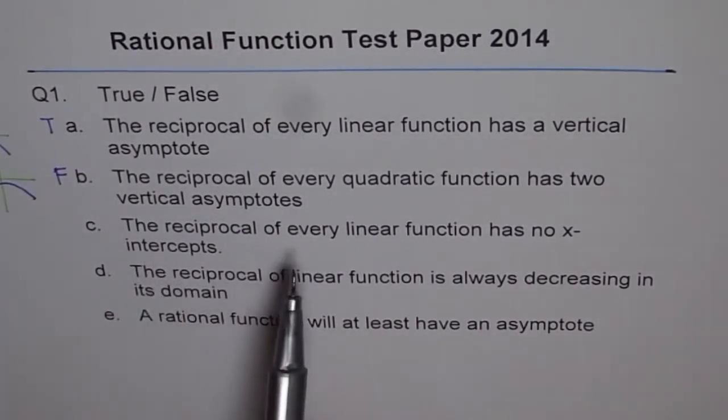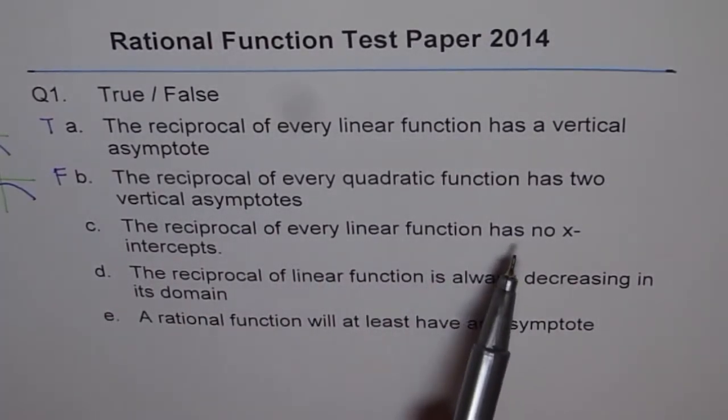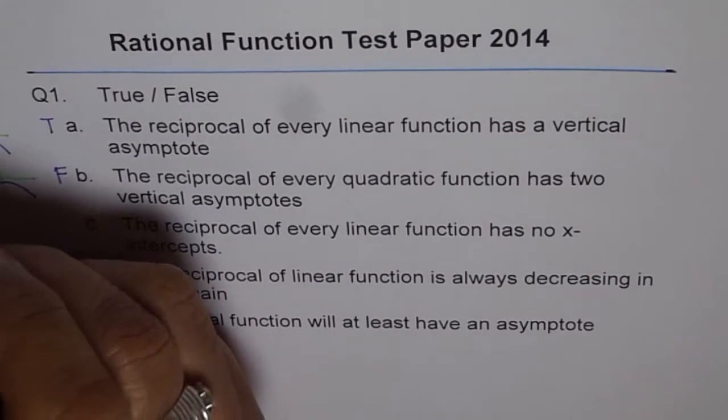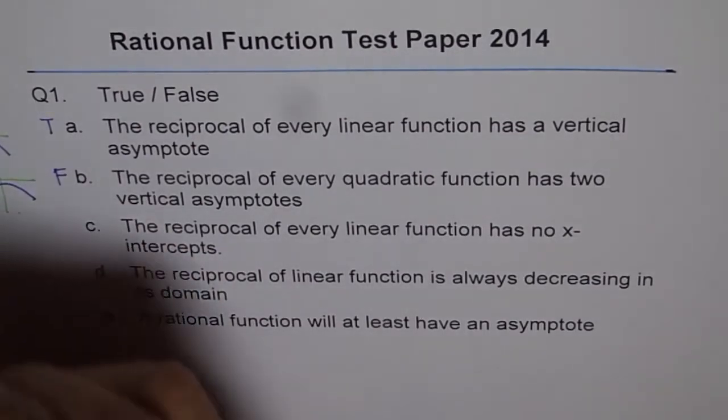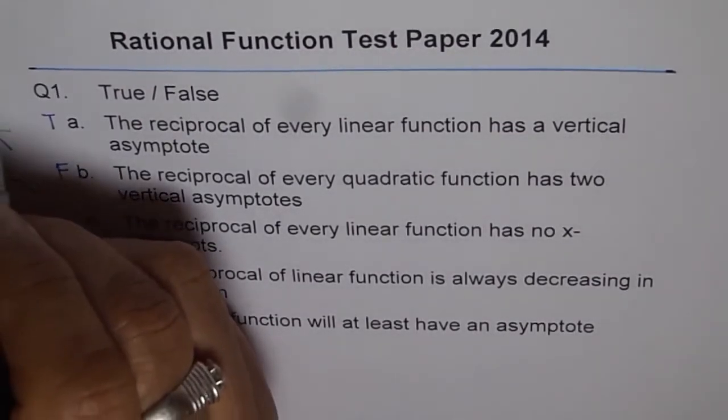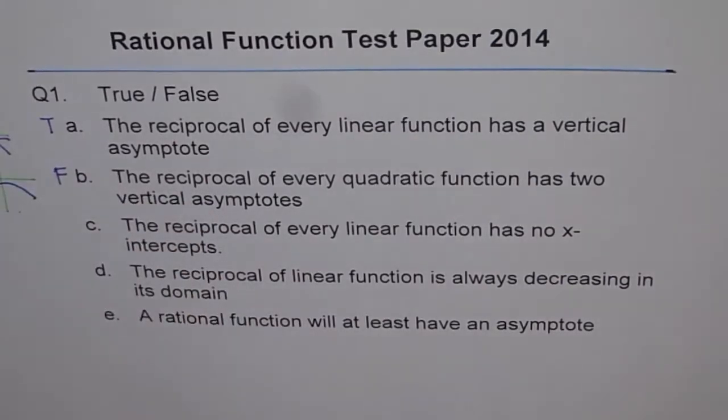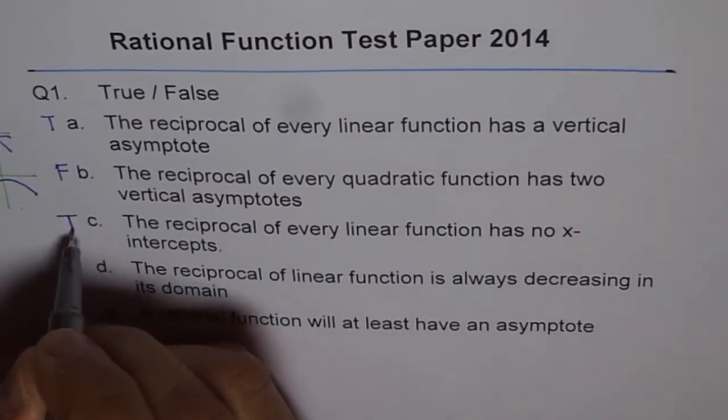The reciprocal of every linear function has no x-intercept. That's true. Think like this. We have this linear function. So if you draw a reciprocal of this, it will be kind of like this. So it will never have any x-intercept. In fact, x-axis is a horizontal asymptote. So that is true.